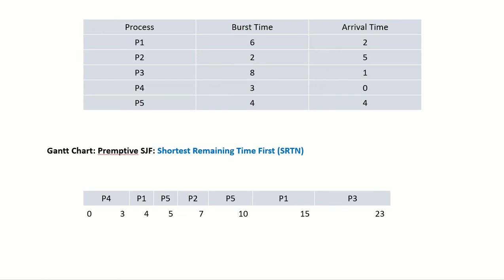In the previous video we saw non-preemptive shortest job first. In this video we are going to look at the preemptive shortest job first algorithm. Preemptive means that if the CPU has been given to a process but another process arrives with a CPU burst time less than what is remaining of the running process, then the new process will be given the CPU. Since the remaining time of the running process is checked against the new arrival, this is also referred to as Shortest Remaining Time First, or SRTN.